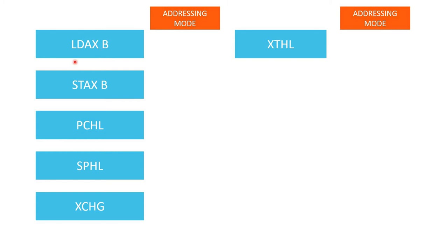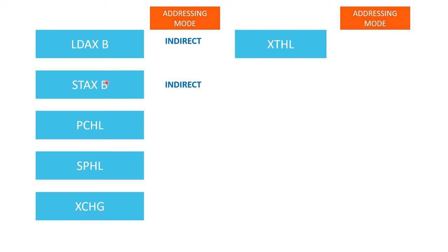Next, LDAX B. This instruction loads the accumulator from a particular memory location whose address is already given in the BC register pair. So the address of the data is not directly given in the instruction but is inside a register — the mode is indirect. Similarly, STAX stores the content of the accumulator in a memory location pointed by the BC register pair, so it also has indirect mode of addressing.